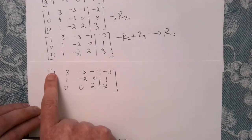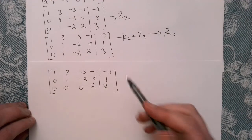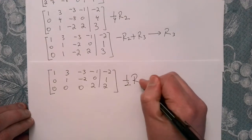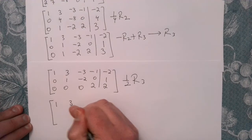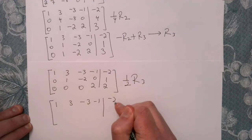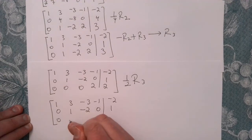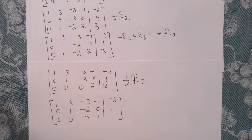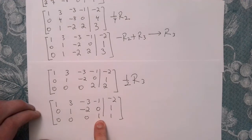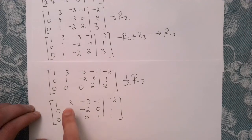We've got a pivot here and a pivot here. Let's get a pivot in row 3 as well so each row has a leading 1. Taking one half of row 3 gives us 0, 0, 0, 1, 1. We can now use each pivot to make all other entries in its column equal to zero.